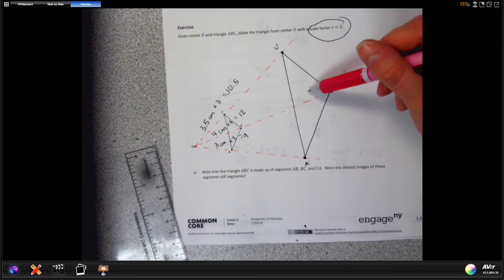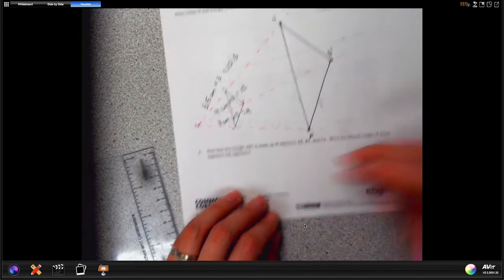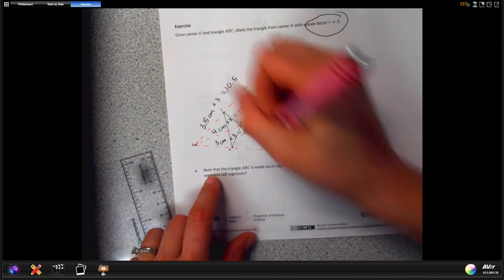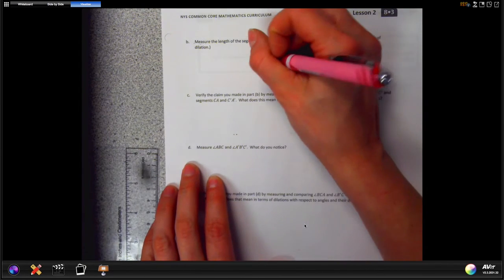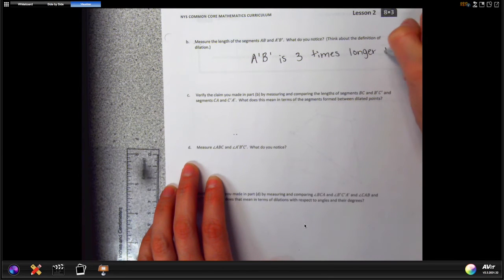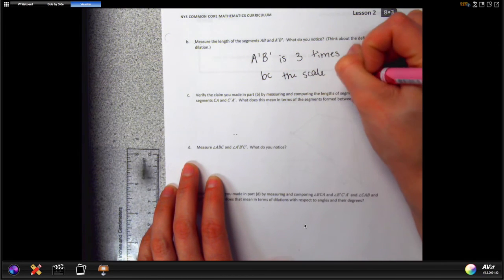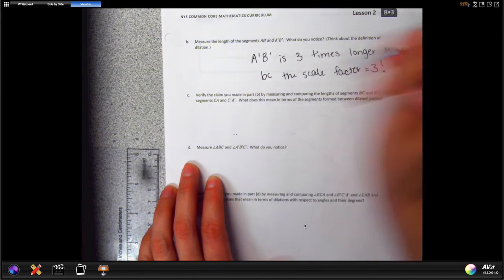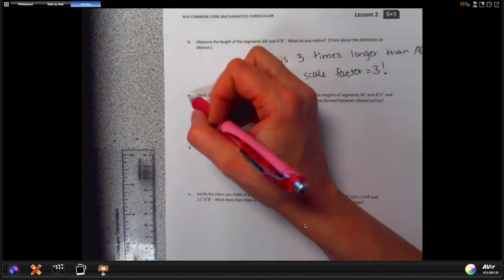And there you go. You've got your original here and you've got your larger one here. So the idea is that this now is 3 times larger than this, and all the lengths are 3 times larger, and so is the size of this. So were the dilated images of our segments still segments? Yes, our segments still remain segments. And if we measured all of our lines, like AB to AB prime, AB prime is 3 times longer than AB because the scale factor is 3. So that will always happen. Your scale factor is gonna be how many times longer or shorter your images.